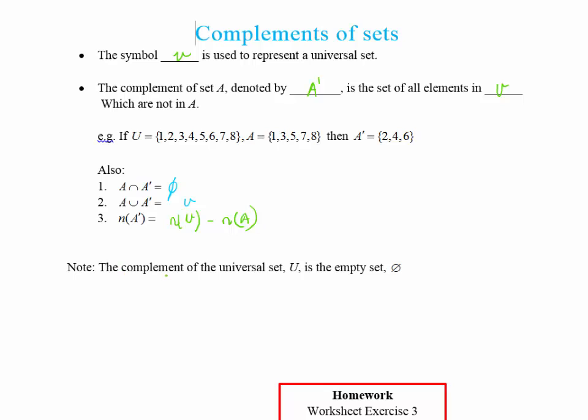The other thing to note is a complement of the universal set U is the empty set. Because the complement of U, anything that's not in my universal set, would have to be nothing. Because the universal set is a set that U is the full set of whatever you are looking at.